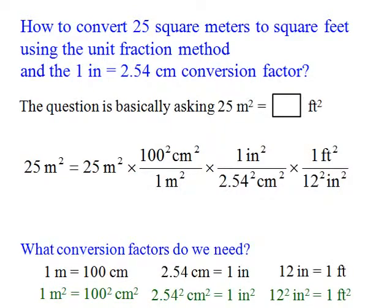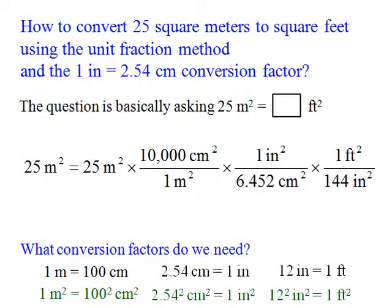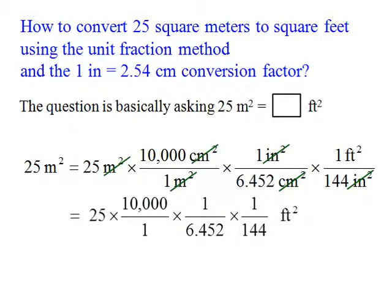Now both sides are equal. We can square all those numbers. We cancel meter square with meter square, centimeter square with centimeter square, and inch square with inch square. What is left is feet square. Multiplying all the numbers together, we get 269.1 feet square.